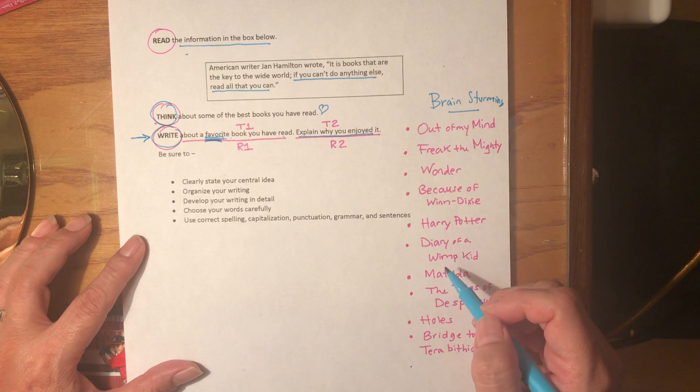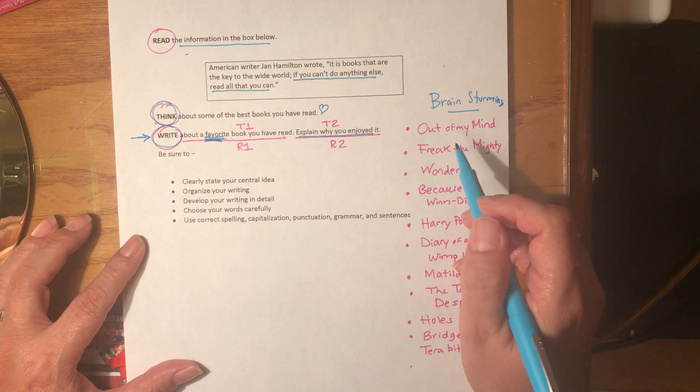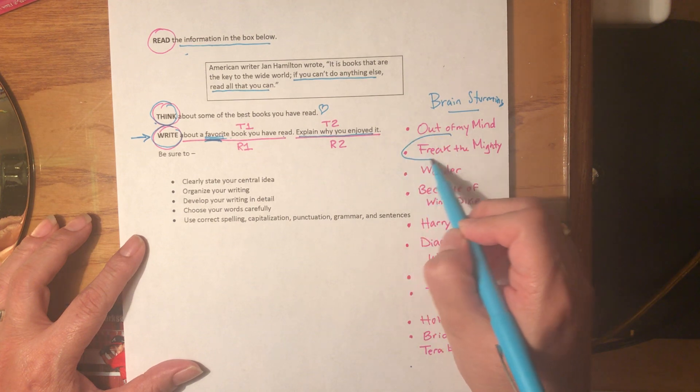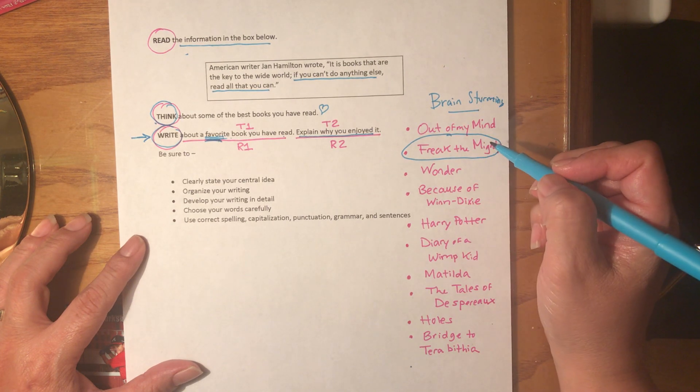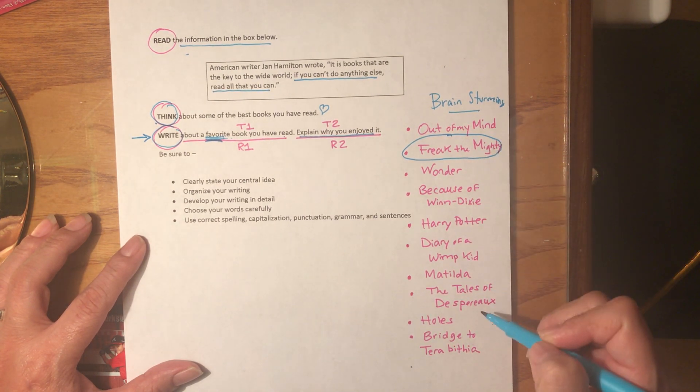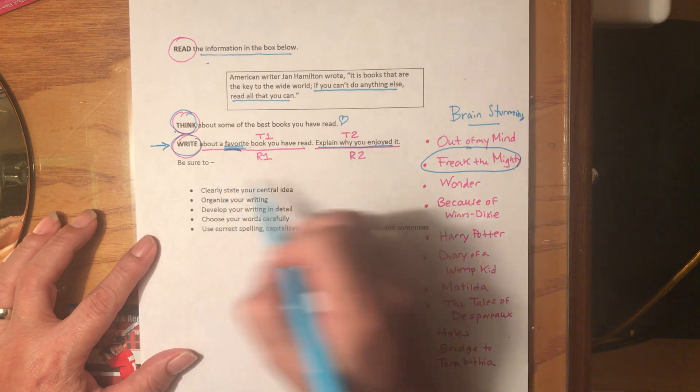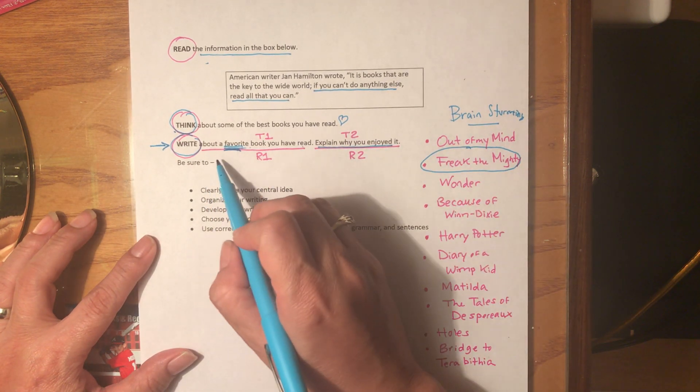A book that you're really familiar with, that you have a lot to say about. Maybe it's not your favorite, but if that's the one you remember, then select that one because you remember the most about it. I would probably select Freak the Mighty, but that's me. After you select one, you think: what am I going to do?